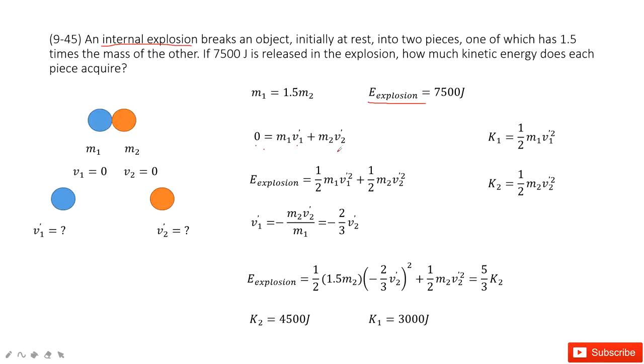So 0 equals m1v1 plus m2v2, right? And the explosion energy just transfers to the kinetic energy for part one and part two.